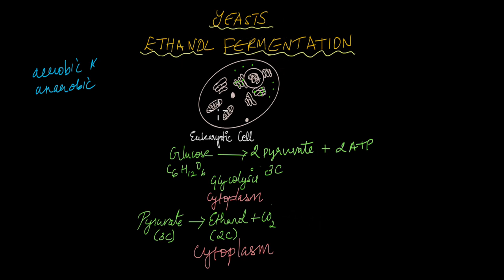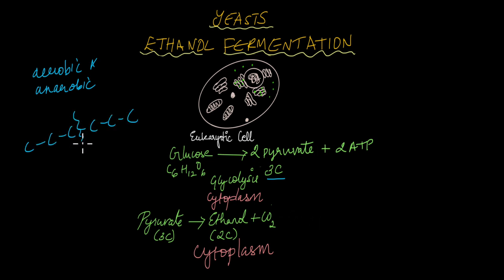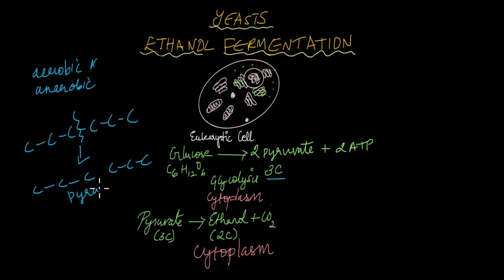In yeast cells, initially glucose is converted to two molecules of pyruvate, which is a three-carbon compound. This six-carbon glucose is broken down essentially to give two three-carbon molecules. This three-carbon molecule is known as pyruvate, and this step is the first step of cellular respiration.